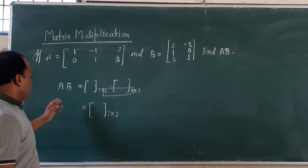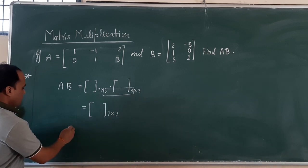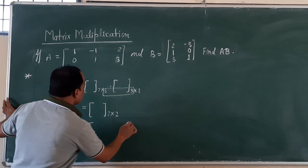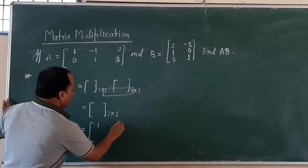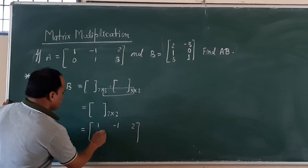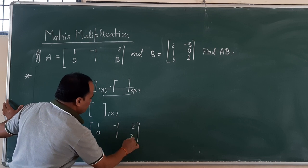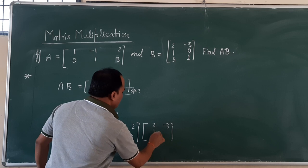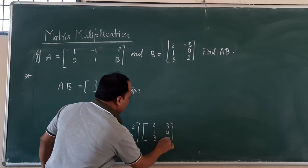After that, we go further. Now, how do we perform? Write these two matrices: 1, minus 1, 2, 0, 1, 3, and 2, minus 3, 1, 0, 3, 1.